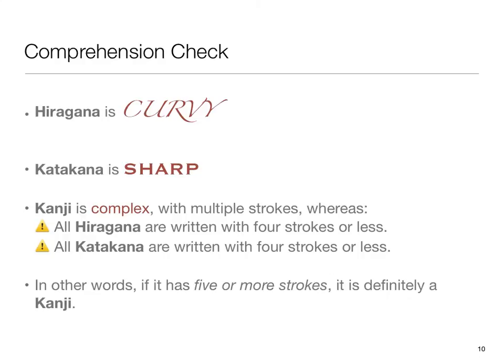So a quick recap. How do we tell hiragana apart from katakana apart from kanji? Remember, hiragana is curvy. Katakana is sharp. And when it comes to kanji, we can recognize them because kanji is very complex with multiple strokes. A good rule of thumb to keep in mind: all hiragana are written with four strokes or less, and all katakana are written with four strokes or less. Therefore, if it has five or more strokes, it is definitely a kanji. Now, there are a good many kanji that are four or fewer strokes as well — those will be obvious to you once you've learned the basic 46 hiragana and katakana syllables. For now, keep in mind that hiragana and katakana are vastly more simple to write than the majority of kanji.